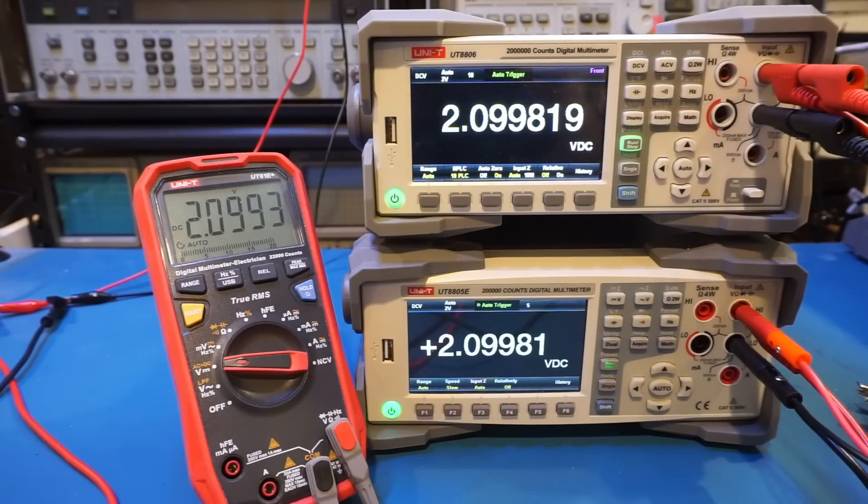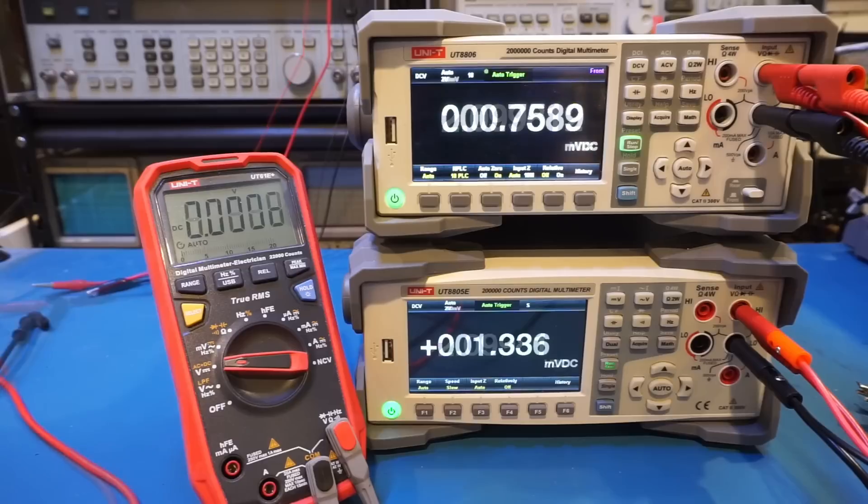Anyway, in my opinion, multimeter counts is a better indicator, as at least you can easily tell what the maximum possible display is for a given meter. So the higher the counts or the higher the number of digits, the higher the measurement resolution, right?